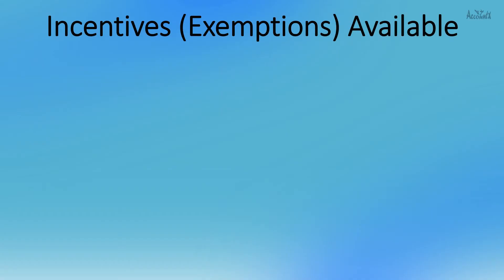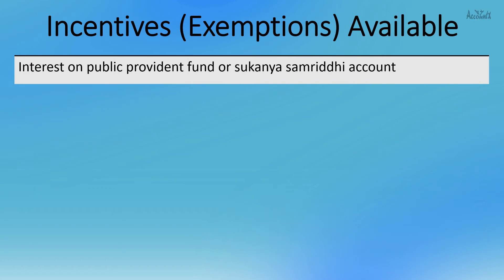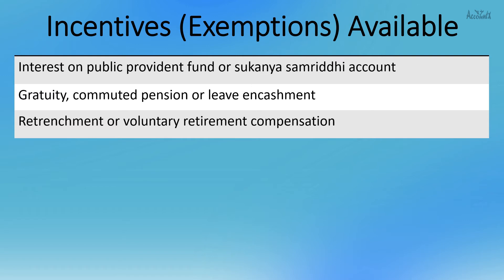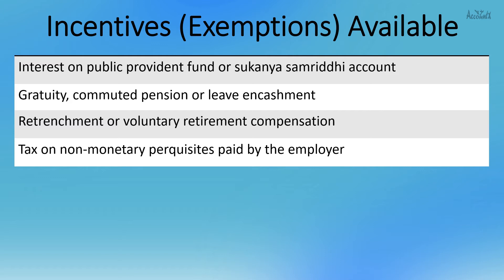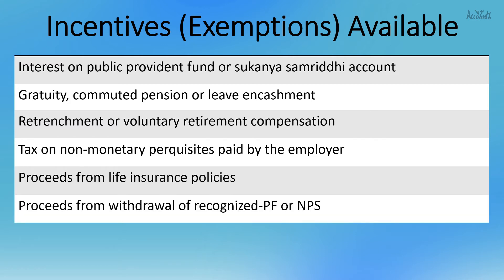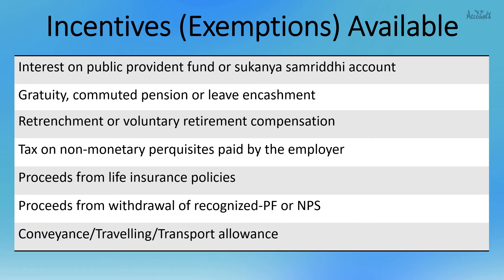Now let us understand what exemptions would still be available under the alternative tax regime. These include: interest on Public Provident Fund or Sukanya Samriddhi account, gratuity, commuted pension or leave encashment, retrenchment or voluntary retirement compensation, tax on non-monetary perquisites paid by the employer, proceeds from life insurance policies, proceeds from withdrawal of recognized provident fund or NPS, and conveyance, travelling, and transport allowances.